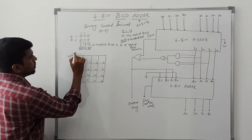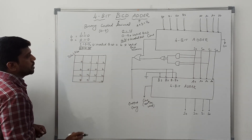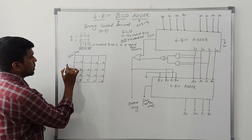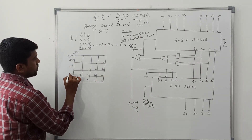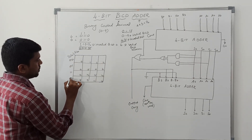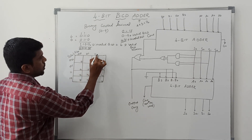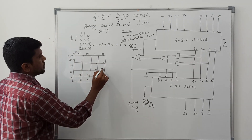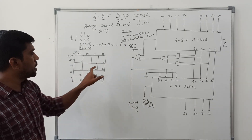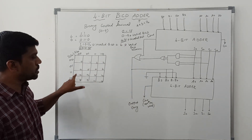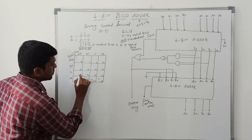S3 and S2 are the vertical inputs, and S0 and S1 are the horizontal inputs. The invalid BCD numbers — 10, 11, 12, 13, 14, 15 — are placed into the K-map cells as don't-care or ones to identify the groupings.